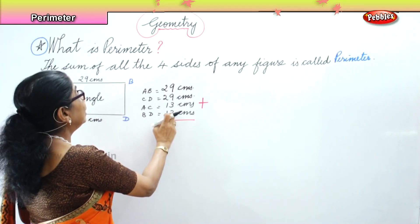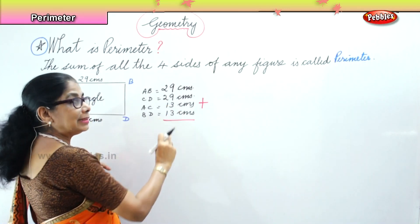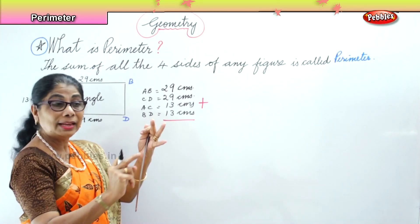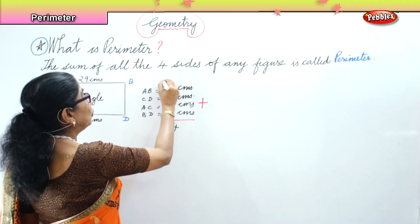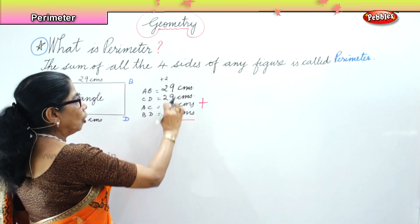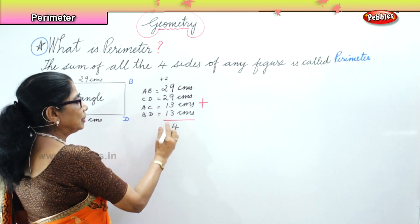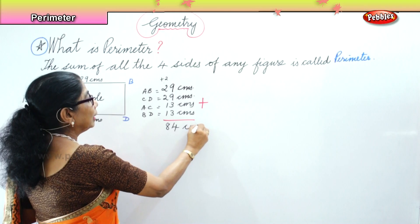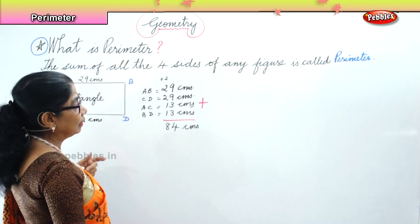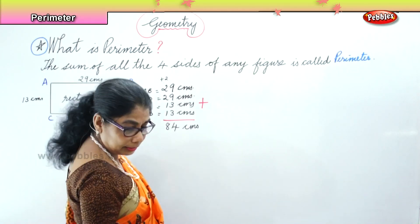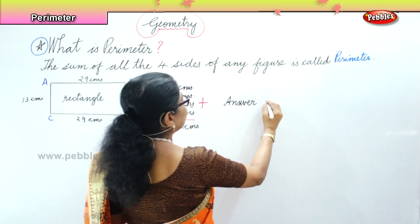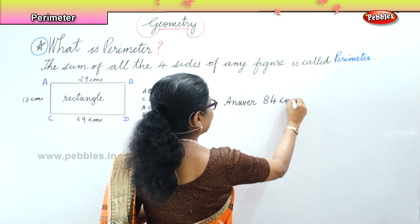So when I add up all the four sides: 9 plus 9 is 18, plus 3 is 21, plus 3 is 24. Carry over the 2, then 2 plus 2 is 4, plus 2 is 6, plus 2 is 8. So 84 is the perimeter of this rectangle. The answer is 84 centimeters.